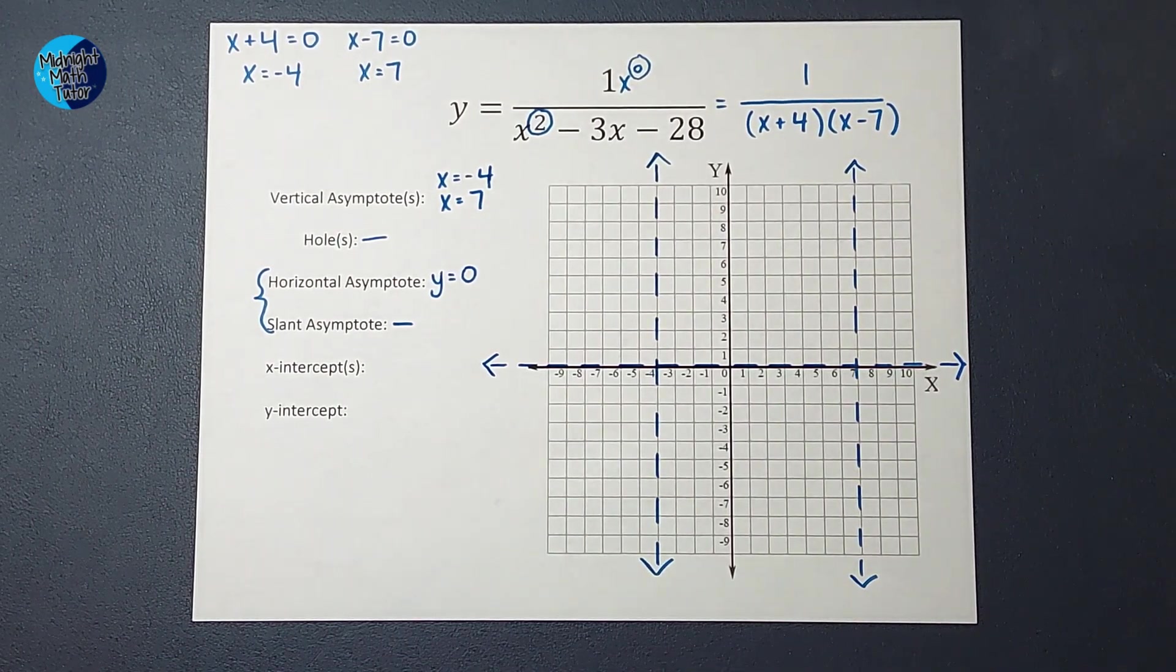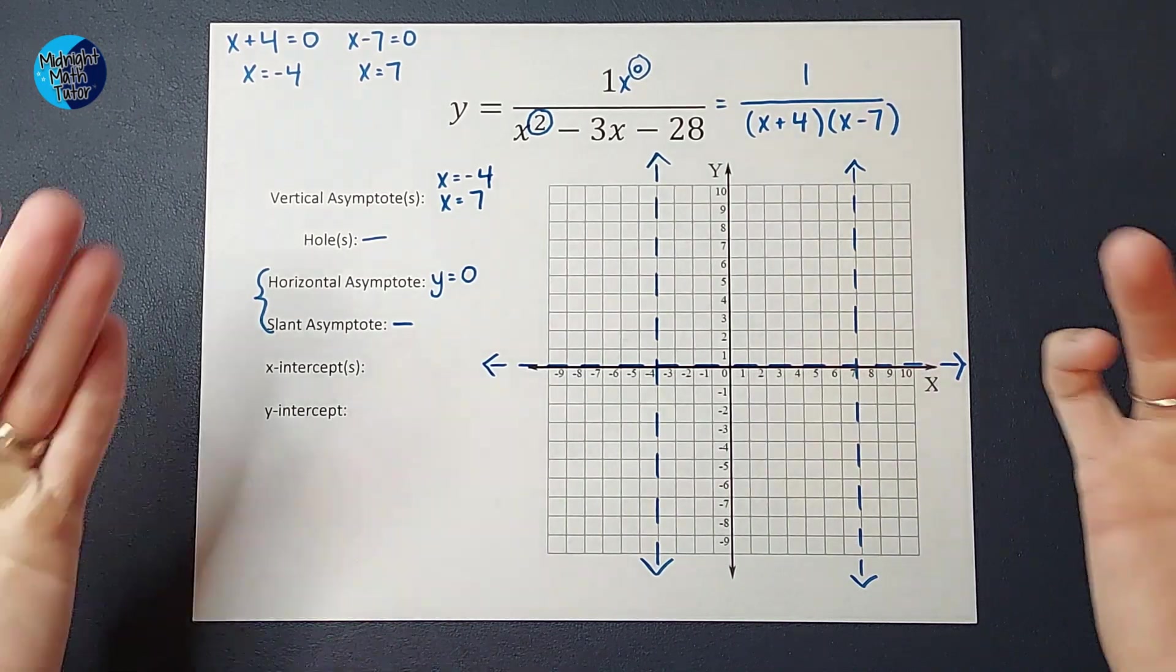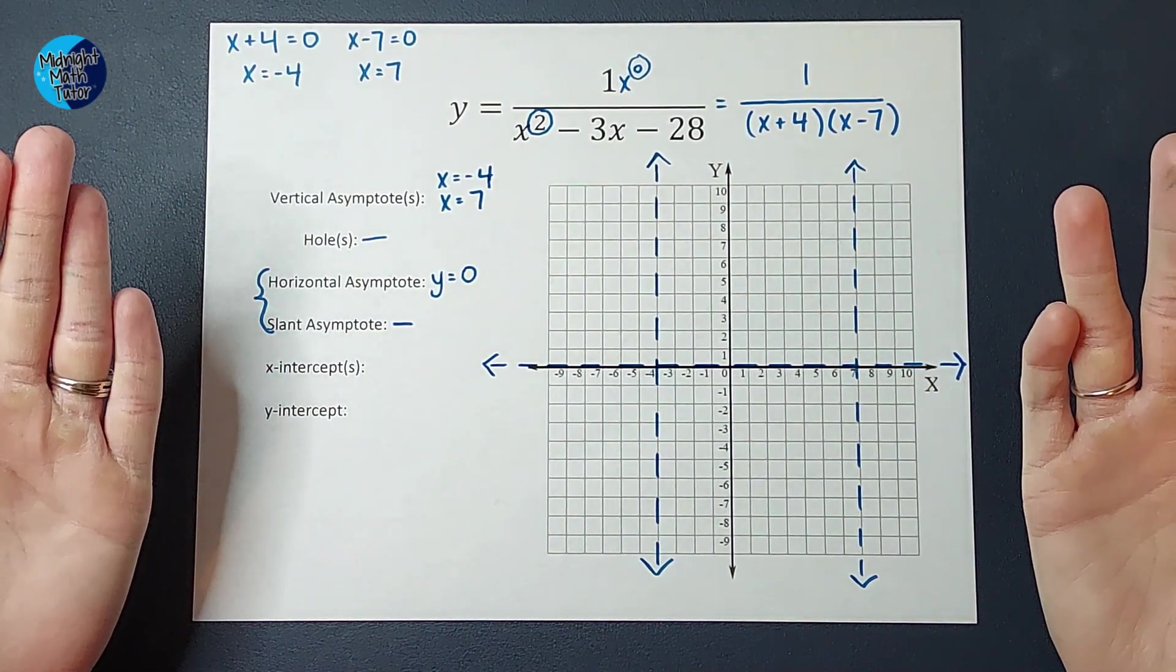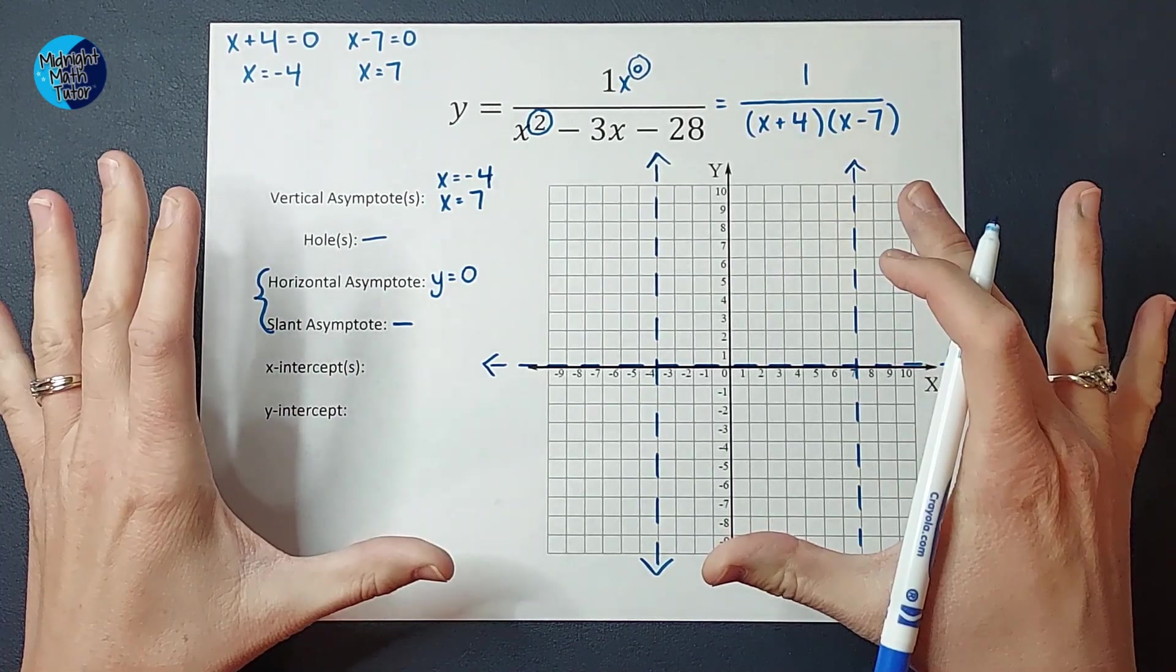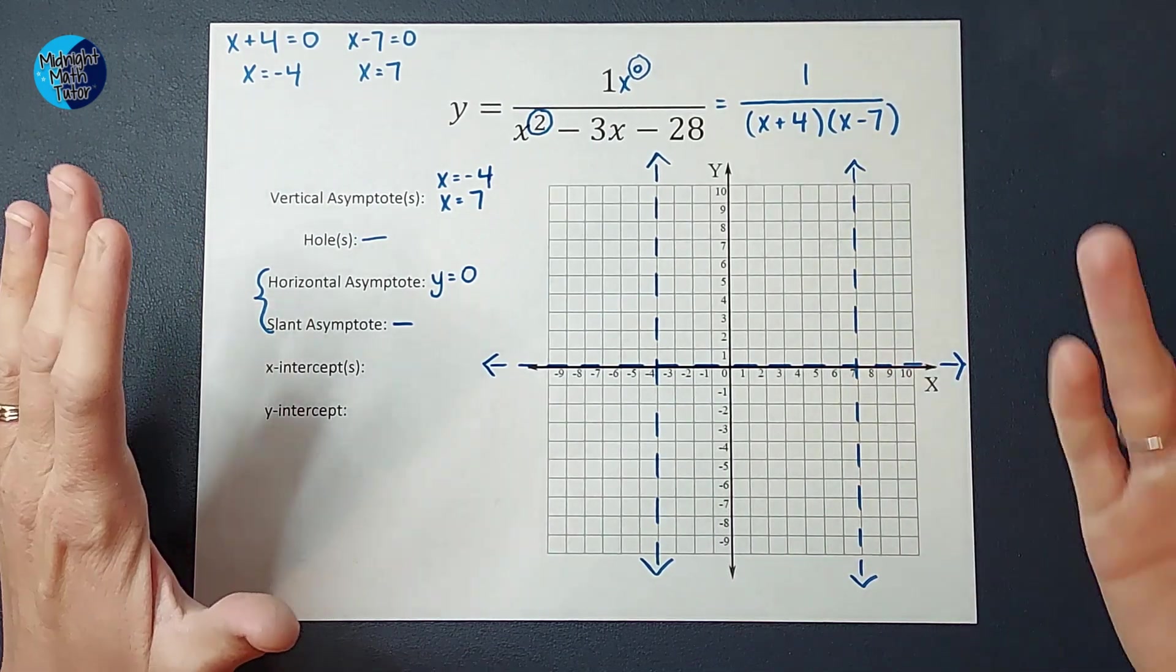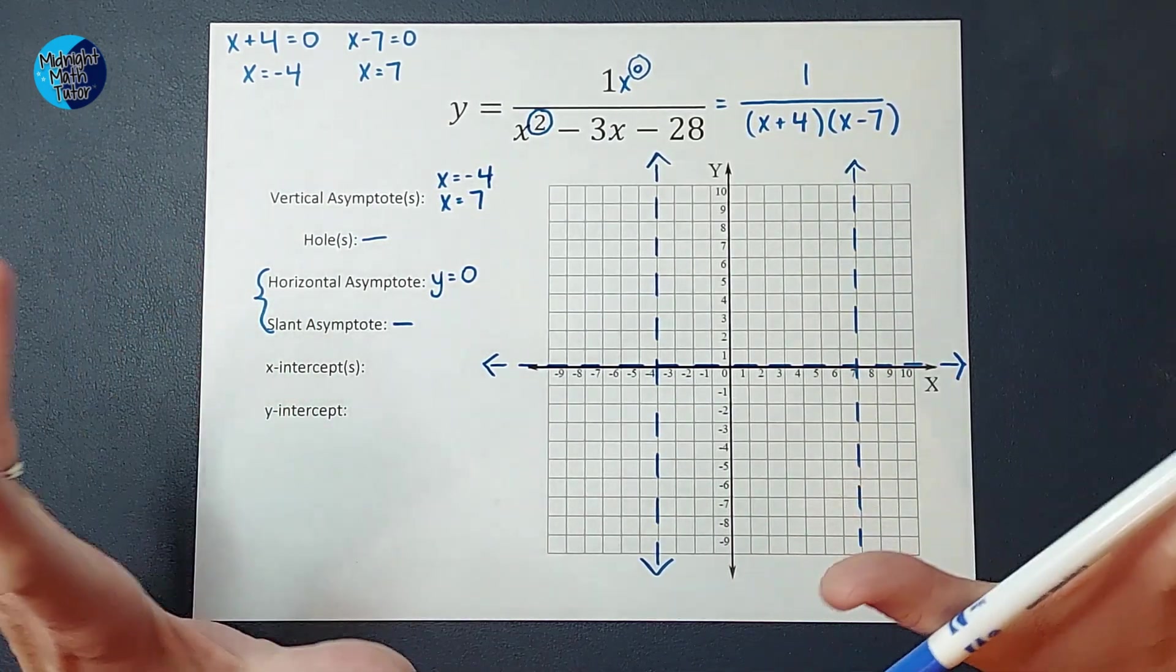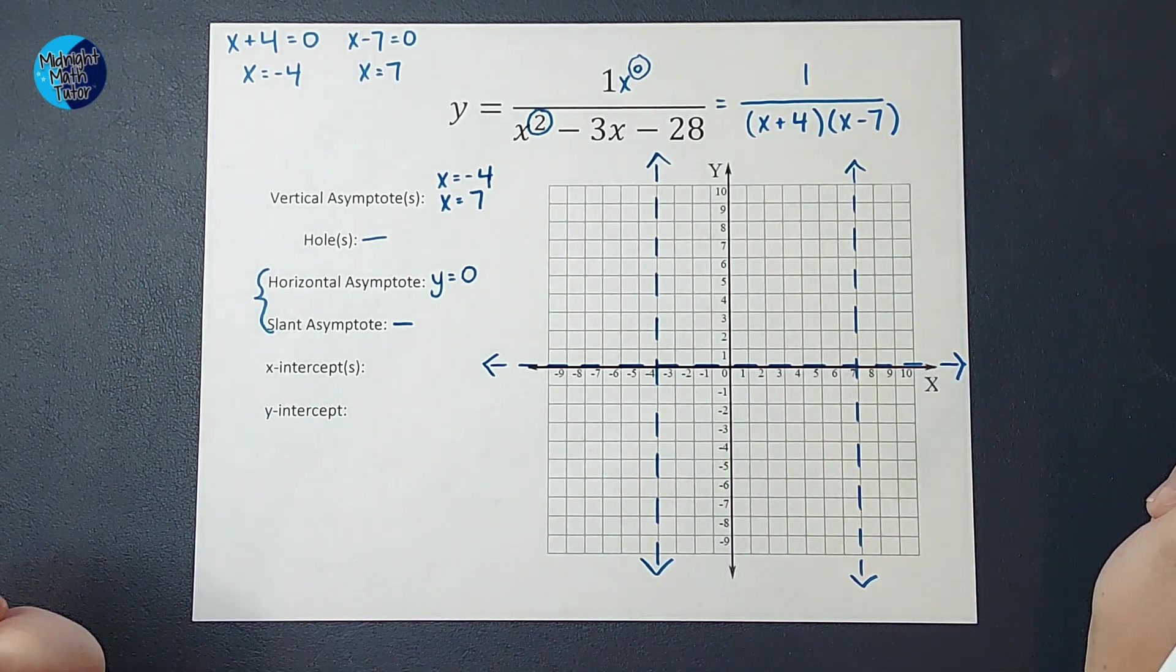But horizontal and slant can be crossed sometimes. Now, I know what you might be thinking because I totally thought it too. What? Why do we even have them if they can be crossed? That's dumb. That's what I thought. But guess what, guys? They still help us figure out the shape of our graph. And they still help us understand where our graph is approaching. So although they can be crossed, sometimes they are still helpful. All right.